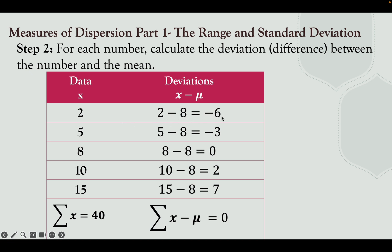So: 2 minus 8 = −6; 5 minus 8 = −3; 8 minus 8 = 0; 10 minus 8 = 2; and 15 minus 8 = 7. Next, find the sum of the deviations: −6 plus −3 = −9; plus 0 = −9; plus 2 = −7; plus 7 = 0. The sum of the deviations is 0.